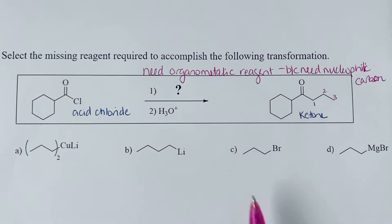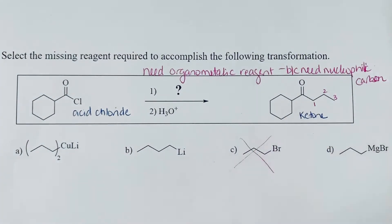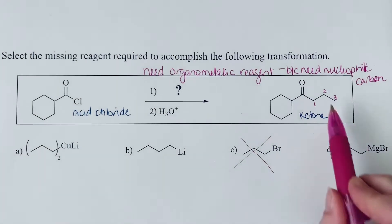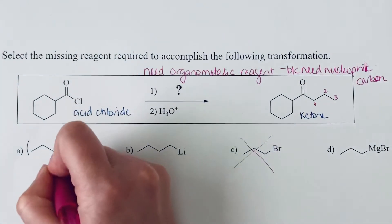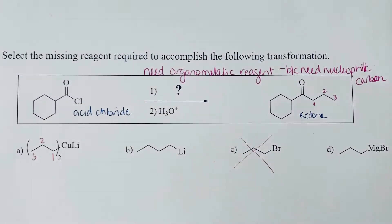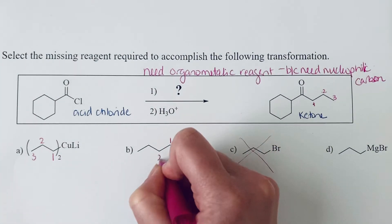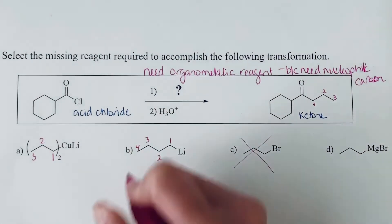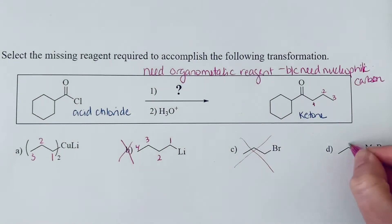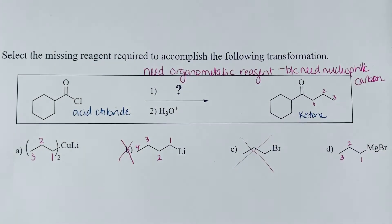So that means we are definitely not looking at C because that's just an alkyl bromide. So we can cross that out. And we see that we need three carbon atoms. We do have three carbon atoms in this cuprate. This alkyl lithium has four, so that's too many carbon atoms. And then this Grignard here has three.